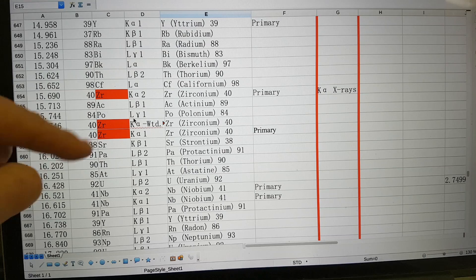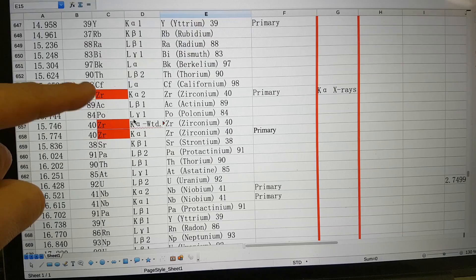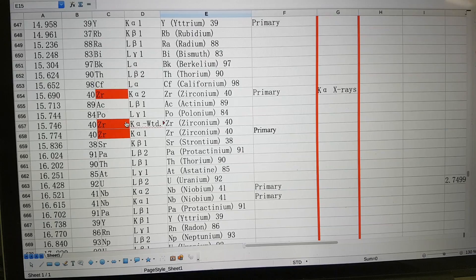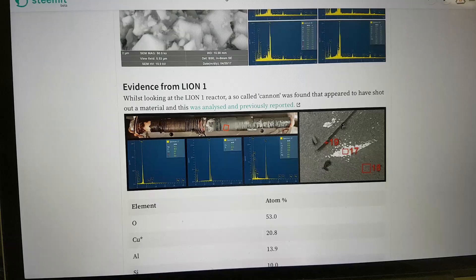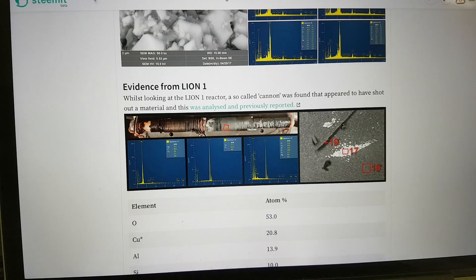So, essentially we are able to say with pretty high degree of certainty that the Lion reactor is not only producing zirconium when it doesn't appear in any of the fuel materials. We are able to say that it produced it in Lion 2 as well as Lion 1 and that the same thing is being seen in the echo part-processed fuel.